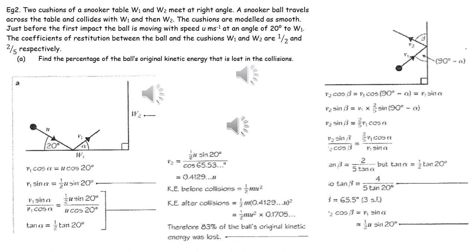Having got V2 in terms of U, we can then work out the kinetic energy of the object after both collisions and the kinetic energy of the object before any collisions, and therefore see how much of the kinetic energy has been lost.